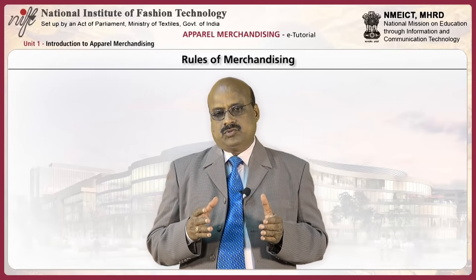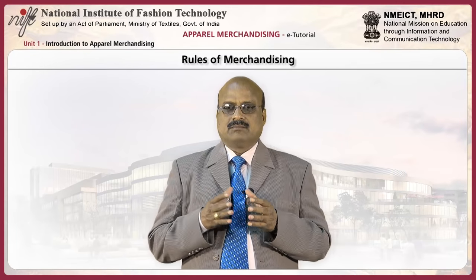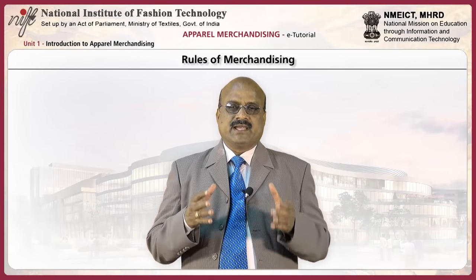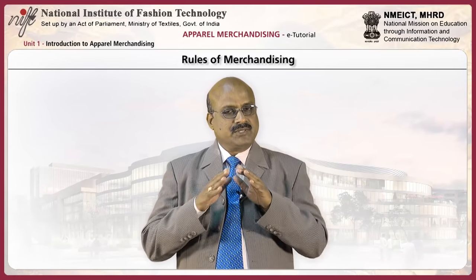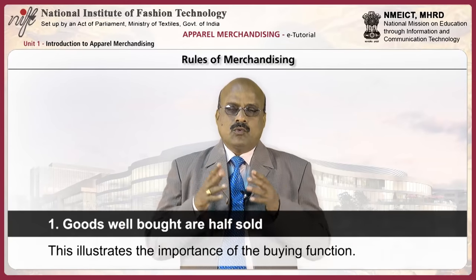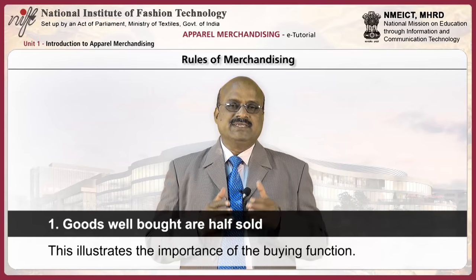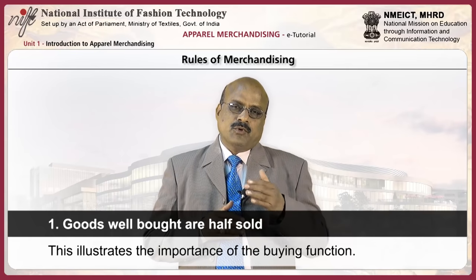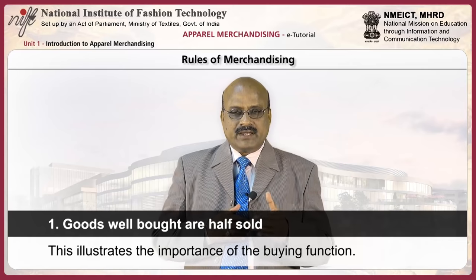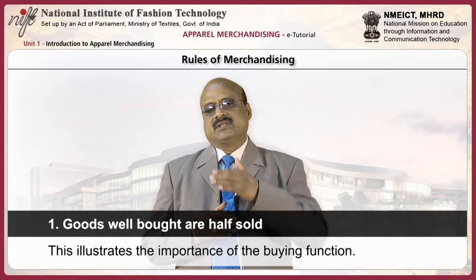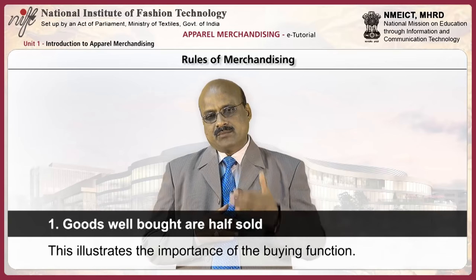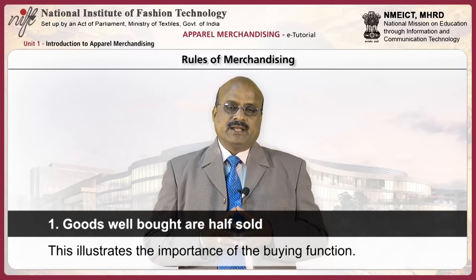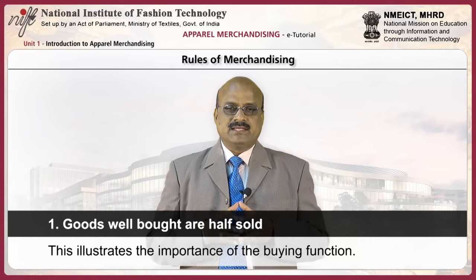There are two thumb rules in merchandising. The first is: goods well bought are half sold. The second is: what is purchased must be sold. 'Goods well bought are half sold' illustrates the importance of the buying function. If good merchandise is bought with customer orientation — keeping customers' tastes and preferences in mind — then selling that merchandise becomes so easy that it is as good as half sold.